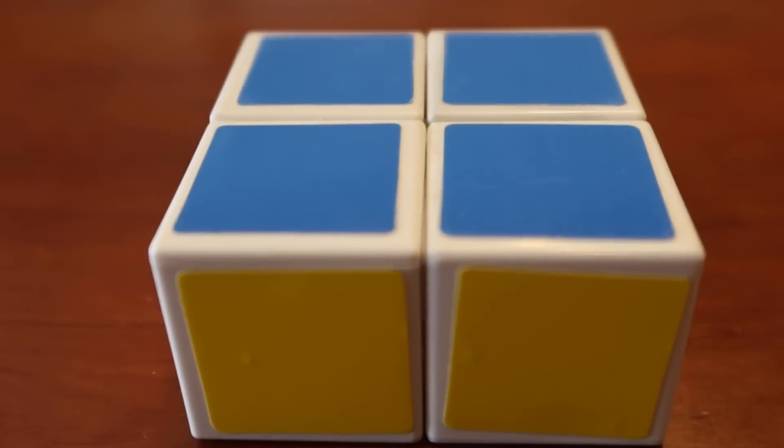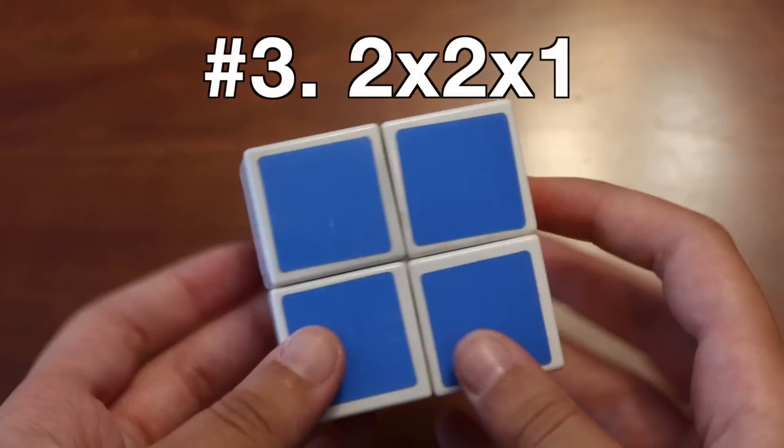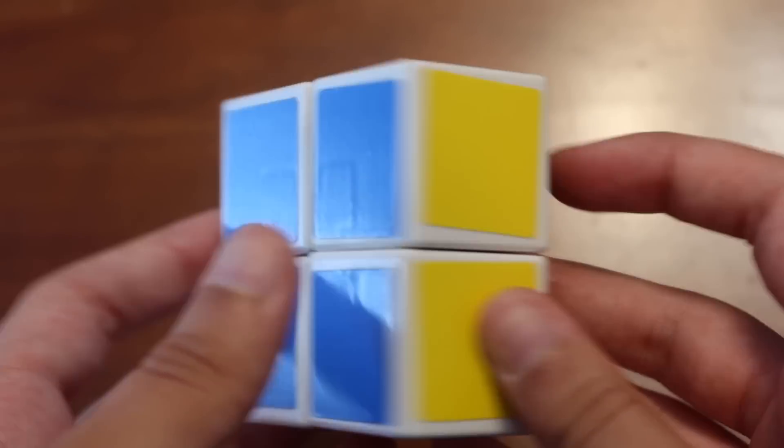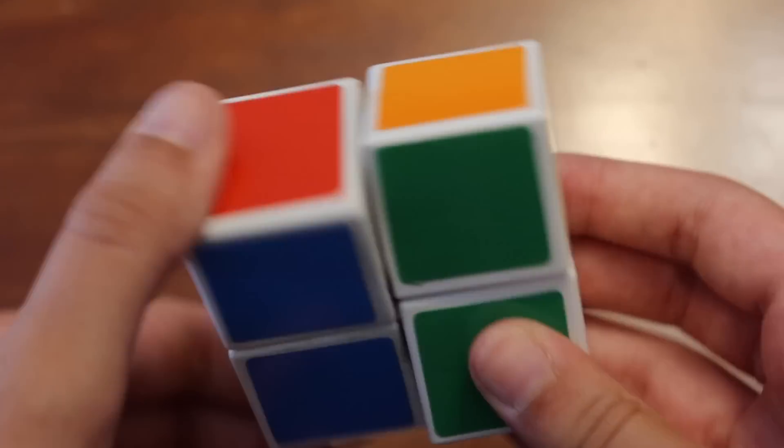In number three, we have the 2x2x1, another super easy cuboid. This one can be solved in three moves or less.